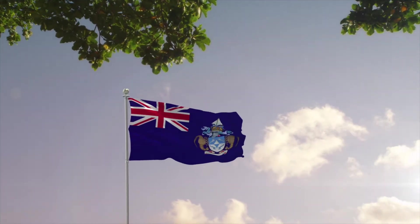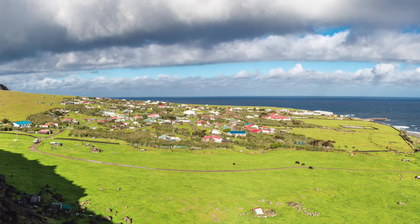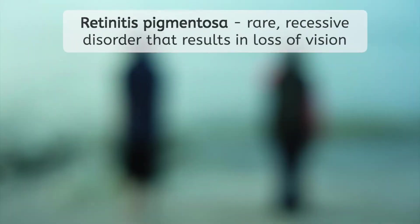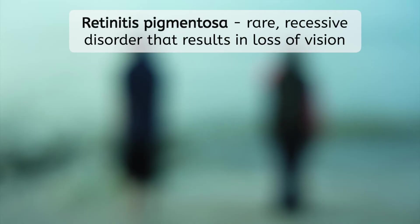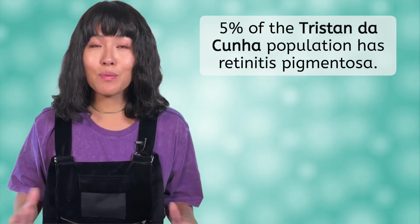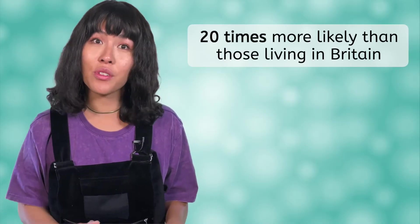An interesting case of the founder effect involving humans occurred on the island Tristan da Cunha. Located in the South Atlantic Ocean, it was colonized by a group of 15 individuals from Britain in the 1800s. It just so happened that at least two individuals, likely related, were carriers for retinitis pigmentosa. This is a rare recessive disorder that results in loss of vision. As the new colony began growing from those initial settlers, the allele was passed down into the resulting generations. A study in the 1960s showed that 5% of the population of Tristan da Cunha had retinitis pigmentosa. This means that inhabitants here are 20 times more likely to have the condition than those living in Britain, where the original colonists came from.